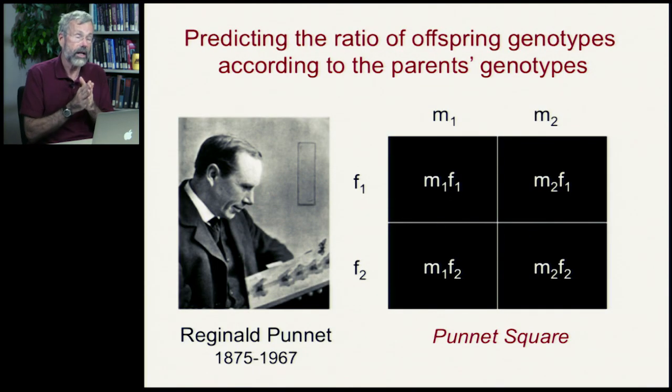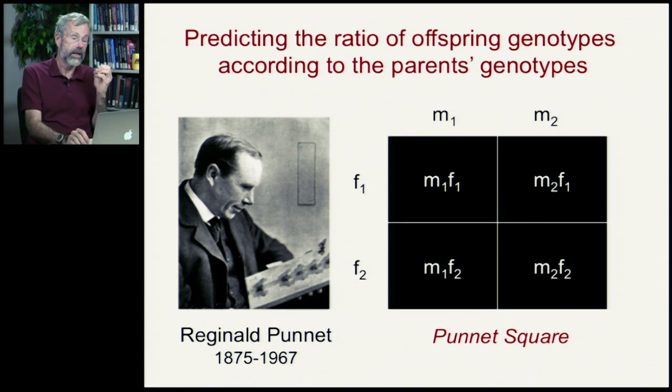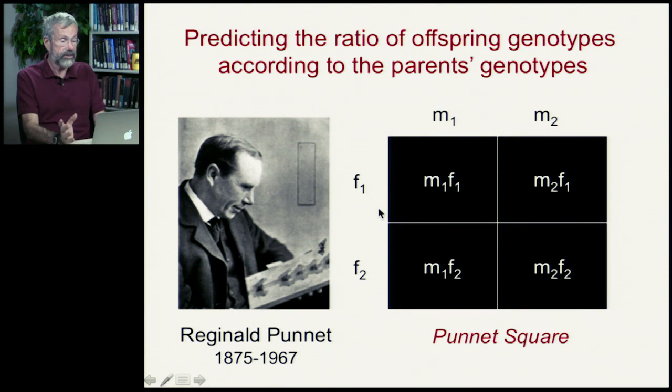So, what explains that characteristic ratio that he saw? If we want to predict the ratio of offspring genotypes, we can do this from the parents' genotypes. And this is a technique that was developed later by a British geneticist named Reginald Punnett, so it's called a Punnett square.